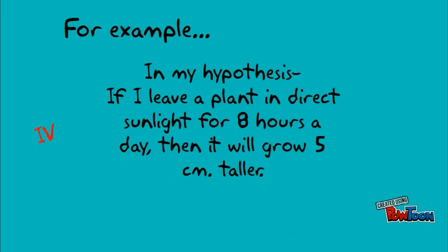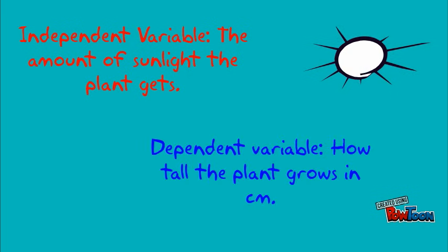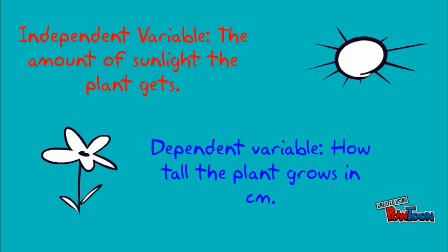The independent variable is after the if, and the dependent variable is after the then. In our example, the independent variable is the amount of sunlight that the plant gets. The dependent variable is how tall the plant will grow in centimeters.